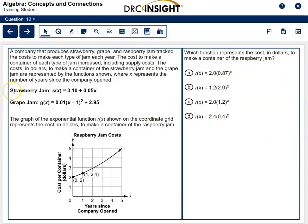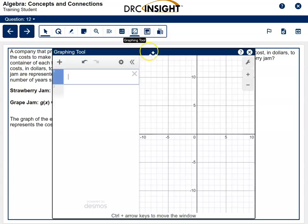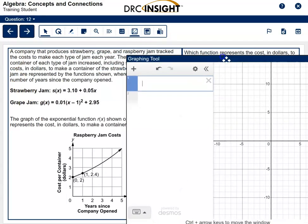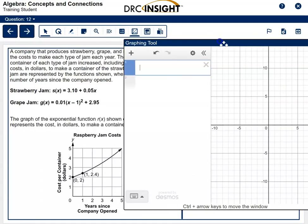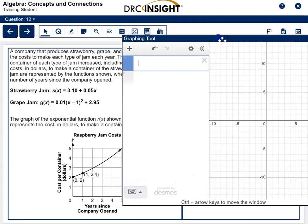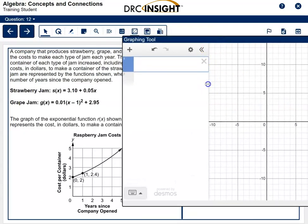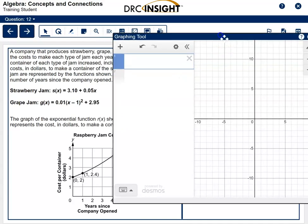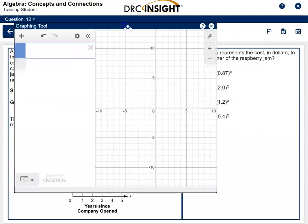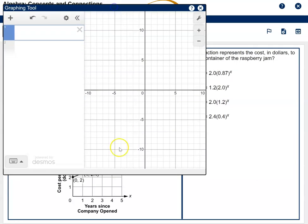The next question is 12, still the same scenario, but this time we're looking at Raspberry Jam, and we're asked to find the function that matches this graph down here. So to do that, we're going to recreate this graph. I'm going to start by setting the window to mimic this window as best I can, and it is a problem because I don't have a lot of space here.